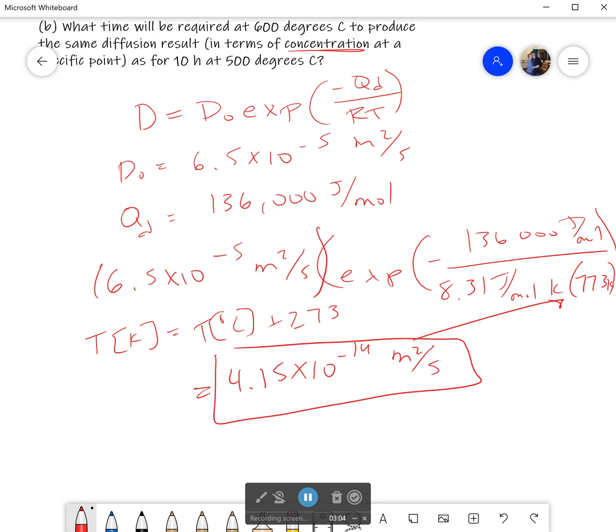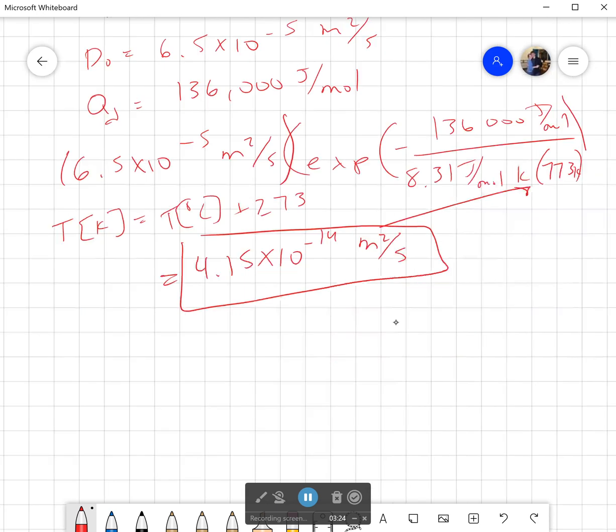The second one's a little bit more difficult. We're trying to figure out what time we would need if we wanted to have the same effect at a particular point. Don't say which point, just any point. So how do we get that?